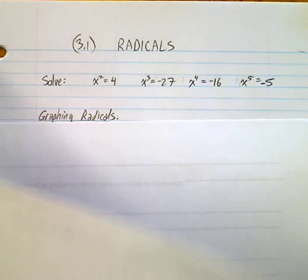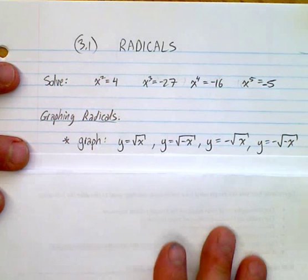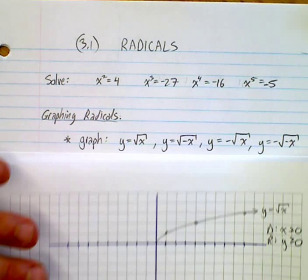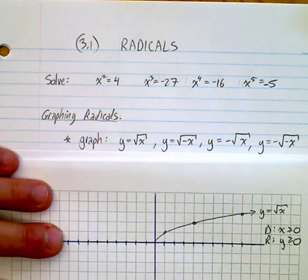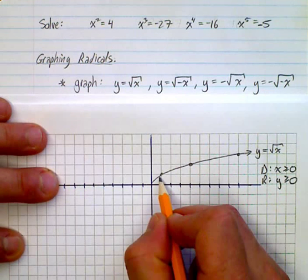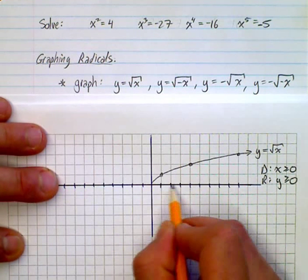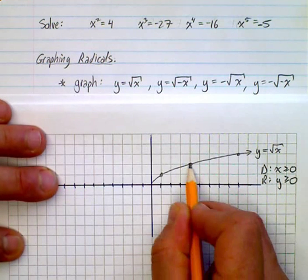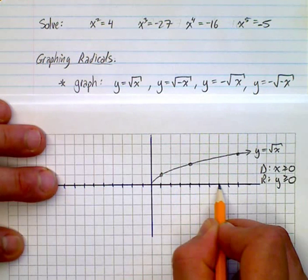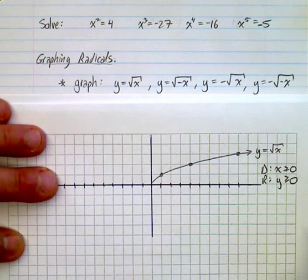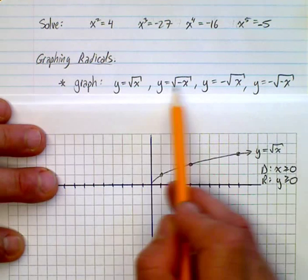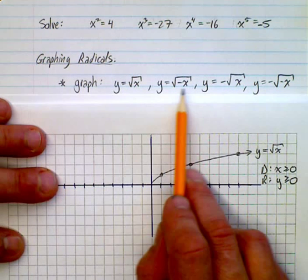Now we're moving to graphing radicals. Can you graph all these different functions? First, here's the original graph: the square root of 1 is 1, the square root of 4 is 2, and the square root of 9 is 3. Now, where do all the other variations lie?